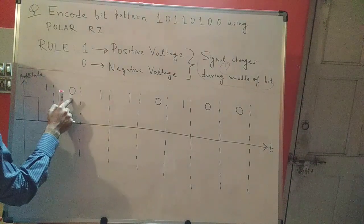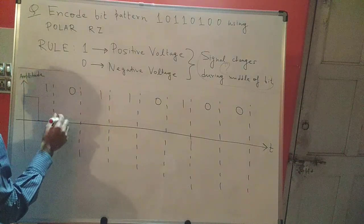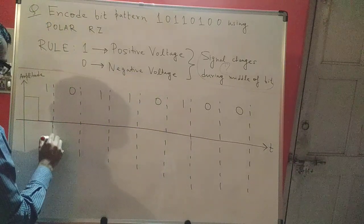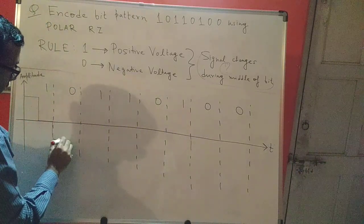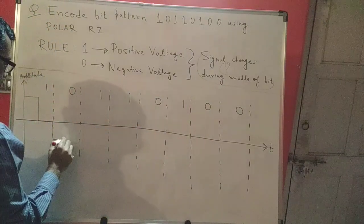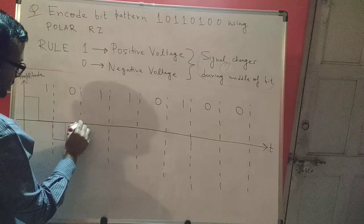Now what do I find? I find a 0. The moment I find a 0 since 0 represents a negative voltage I need to go down and I'll proceed. But here I am at the middle of the bit and the signal changes during the middle of the bit. So I go back up and I proceed.